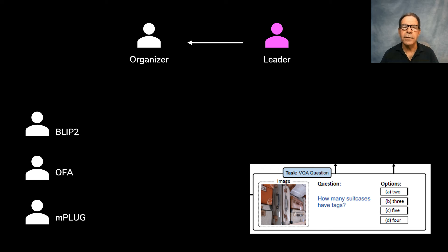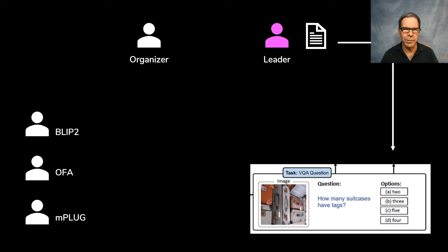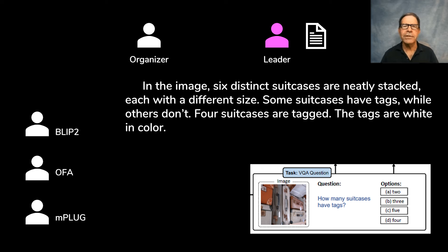First, the organizer reads the question and asks a sub-question. All three visual language models answer the sub-question, and their answers become new inputs to the organizer, who then generates a new sub-question based on those responses. That back and forth continues for a pre-set number of rounds. Then, the leader requests the organizer to summarize the whole chat history. Finally, the leader reads the summary and selects the answer to the original question.